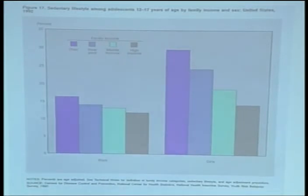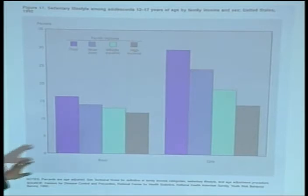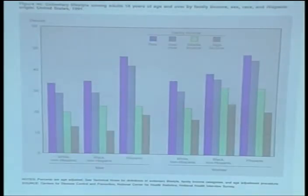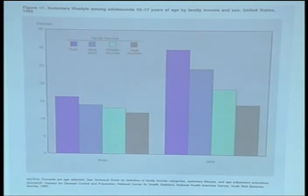Now, this is the same phenomenon — sedentary lifestyle — but here we're looking at adolescents between the ages of 12 to 17, examining family income and males and females. If you look at the gradient, the gradient is steeper for females, but there is a gradient for both males and females. If we only looked at ages 12 to 17, it would look like the disparity among boys is not that strong — it exists, but it's not that strong. It's much more stark for girls.